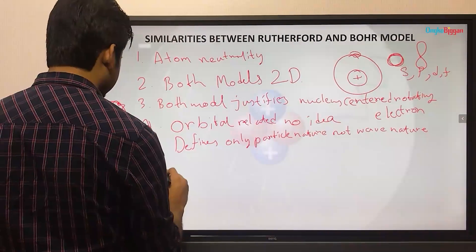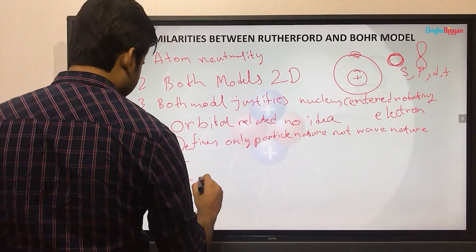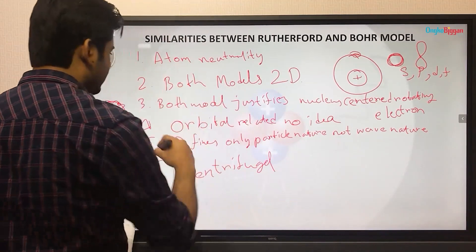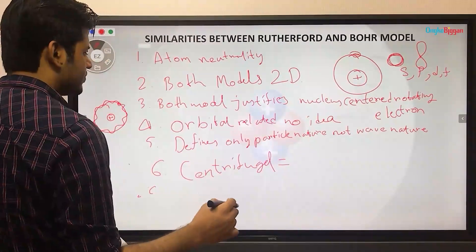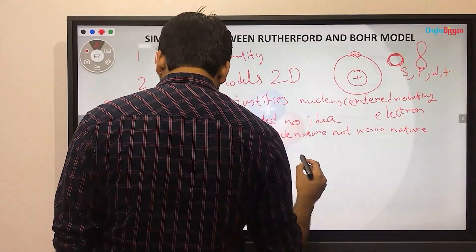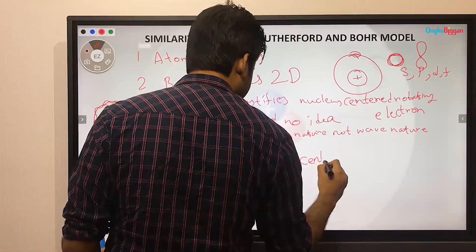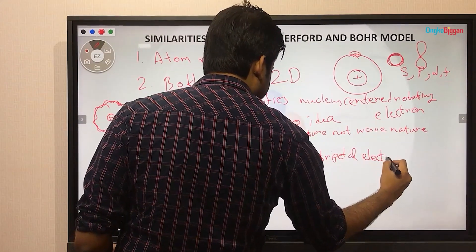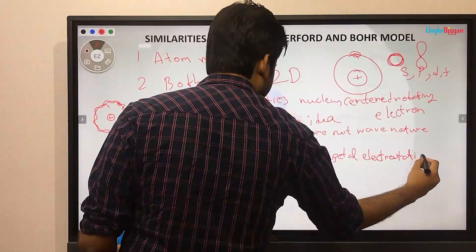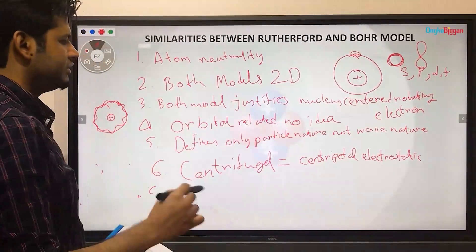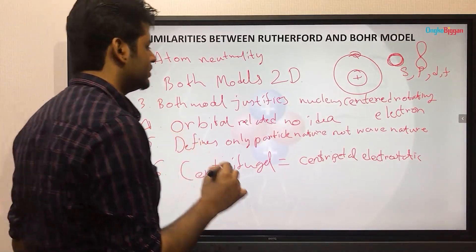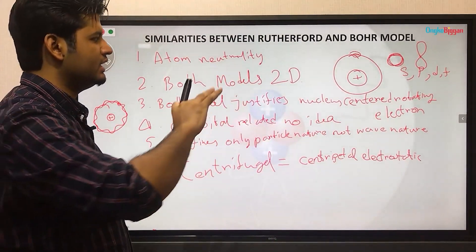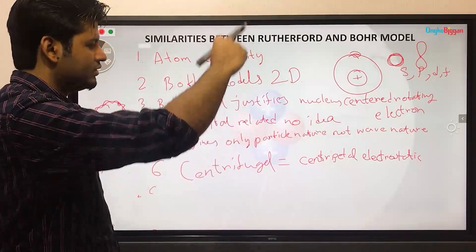Lastly, what is the visual model? The visual model involves centrifugal force — this is the circular method. This is the centripetal electrostatic force. In this case, the electron and proton attraction is the same. If there is a centrifugal force, it is balanced. This is the centripetal electrostatic force — the electron attracts toward the center.